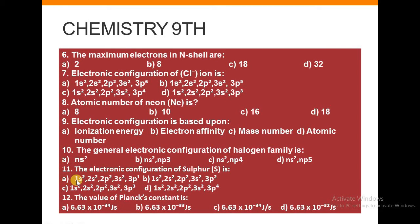Next: Electronic configuration of sulfur is: a) 1s² 2s² 2p⁶ 3s² 3p¹, b) 1s² 2s² 2p⁶ 3s² 3p², c) 1s² 2s² 2p⁶ 3s² 3p³, or d) 1s² 2s² 2p⁶ 3s² 3p⁴. Number 12: The value of Planck's constant is: